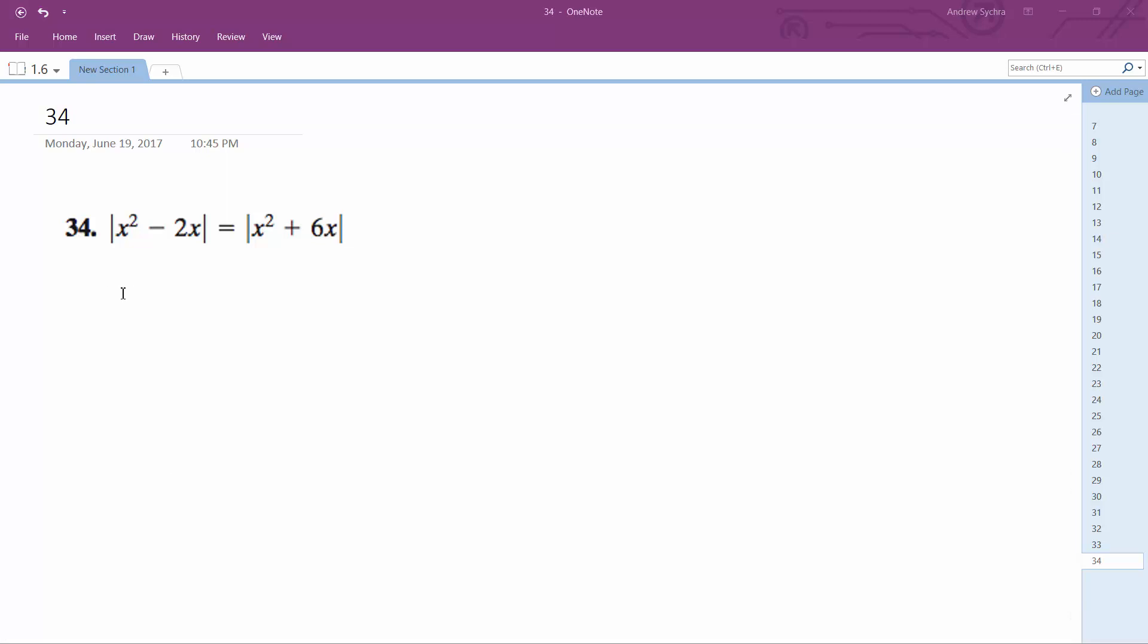So solving this problem, we're going to do it two ways. We'll have x squared minus 2x equals x squared plus 6x, and then we'll have x squared minus 2x equals negative x squared minus 6x.